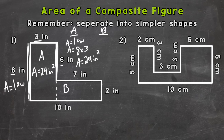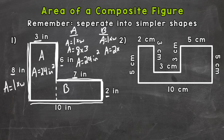Now let's do B. Area equals length times width. Length is going to be this 2 inches, times the width of 7 inches. Do not use the 10 — the 10 goes all the way across; we only want right here, which is that 7 inches. So area equals 2 times 7, which is 14 square inches.